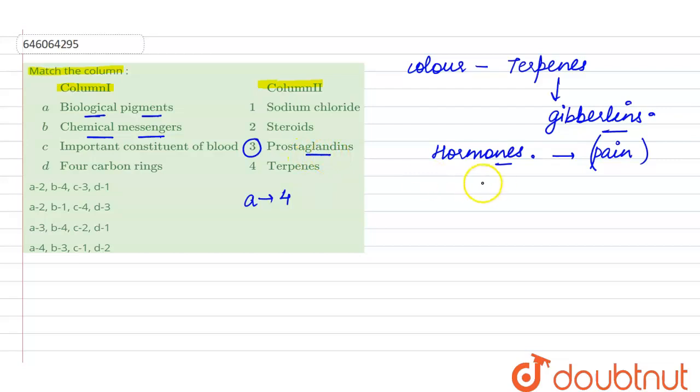That is the prostaglandins. Prostaglandins are produced, they were first discovered in the gonads, so they were named as prostaglandins. They are produced by local tissue as well such as kidneys and testes. They act as chemical messengers to carry the signals. So option B can match with three on the other side.